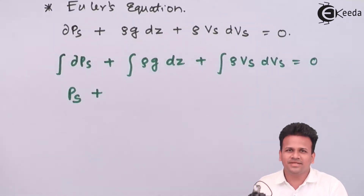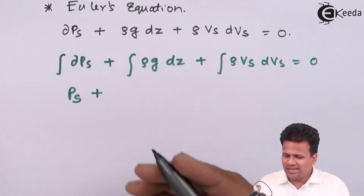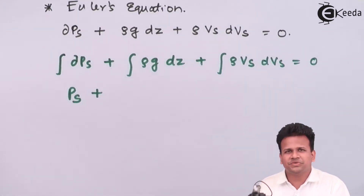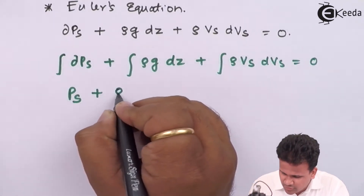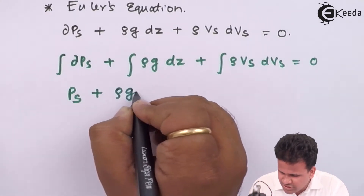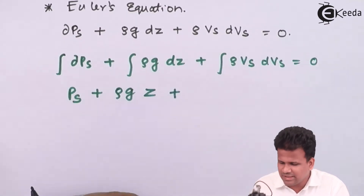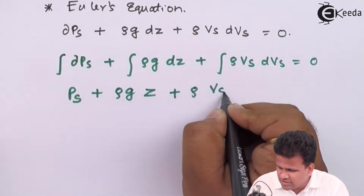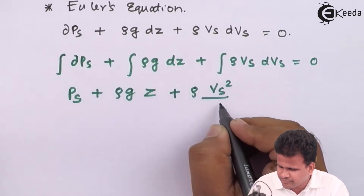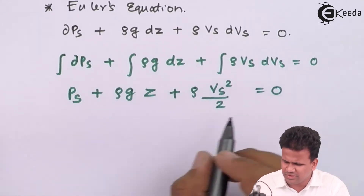in incompressible flow, density remains constant, and acceleration due to gravity is assumed constant. So the integration gives: ρgz + ρV²/2 = 0.